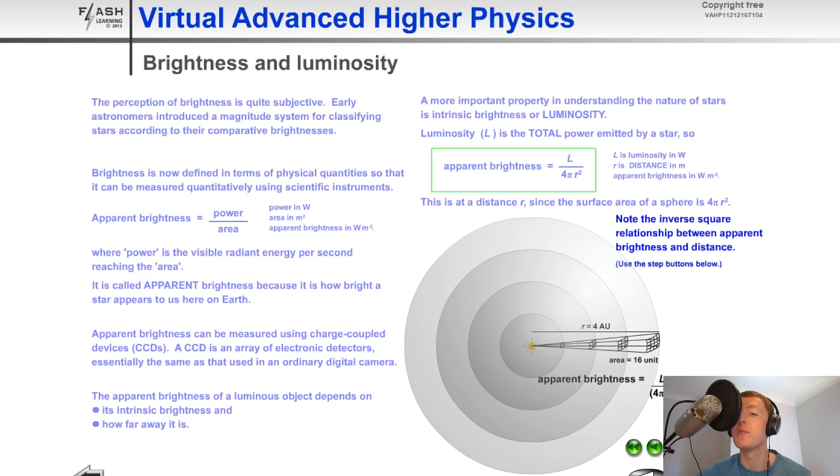Lastly, 4 AU would mean 16 on the denominator because of the 4 squared from the inverse square law. So what this really means is that as the distance between the observer and the star increases, the apparent brightness will rapidly decrease. The brightness will drop off rapidly because of the inverse square relationship.